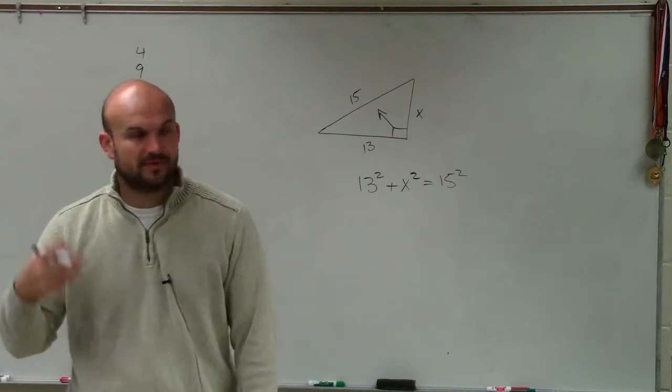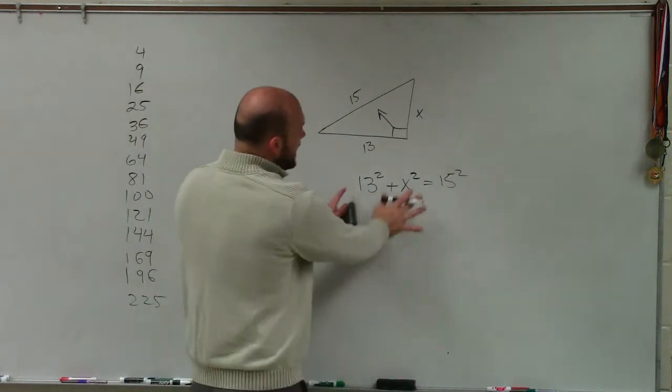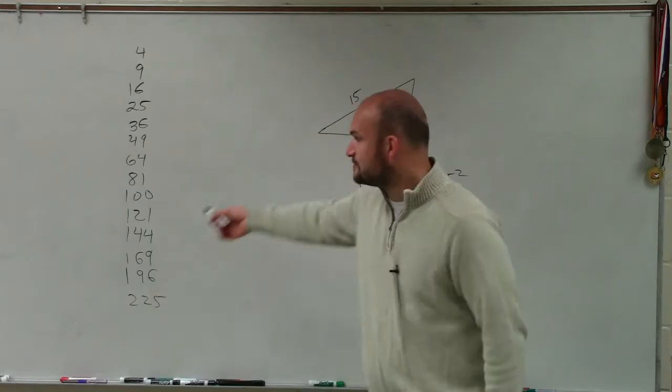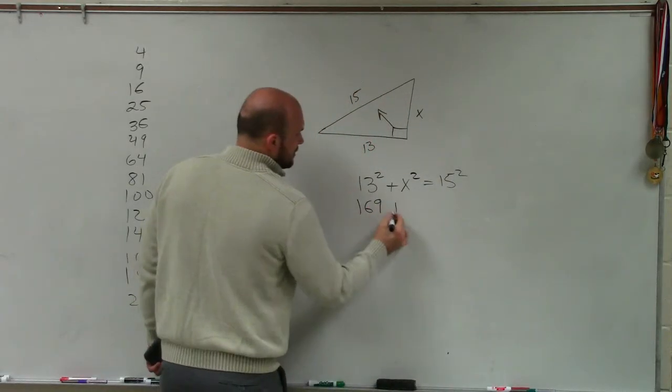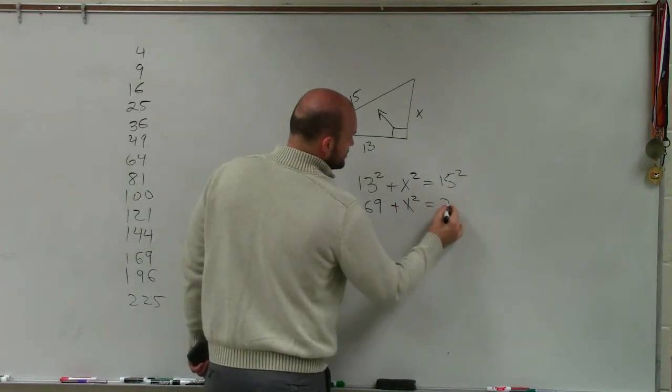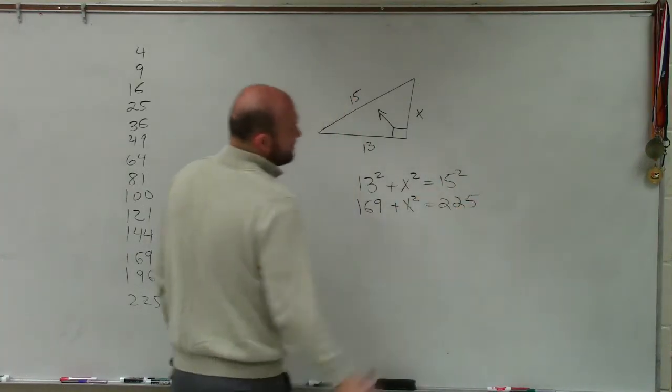Or a squared plus b squared equals c squared. So now I need to go and square these, and this kind of goes back again to knowing these squared numbers. 13 times 13 is 169 plus x squared equals 225.